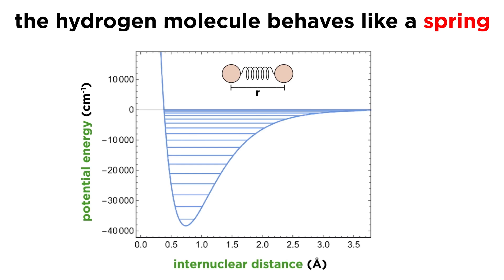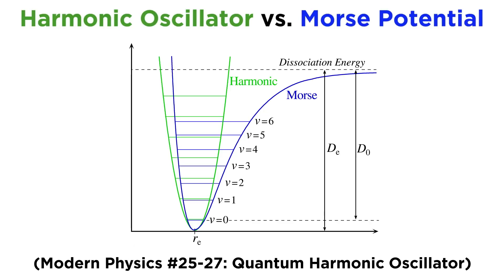To look more closely at the hydrogen molecule, the single covalent bond allows diatomic hydrogen to act approximately like a spring. We actually discussed this in some detail when learning about the quantum harmonic oscillator over in the modern physics series.